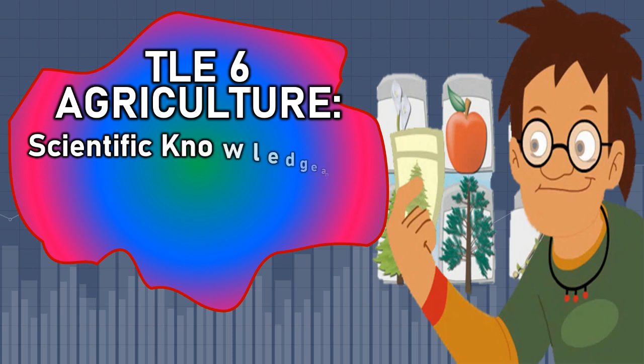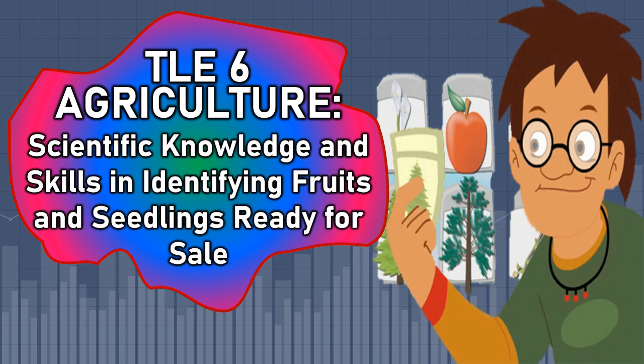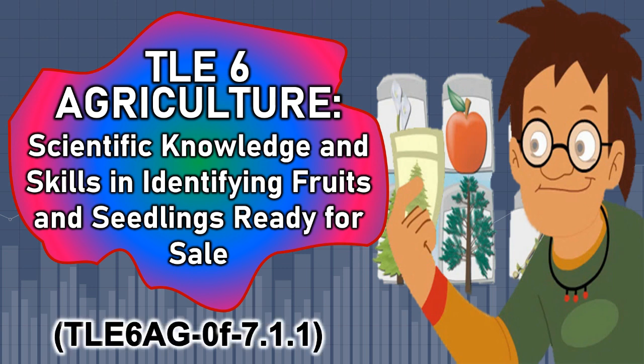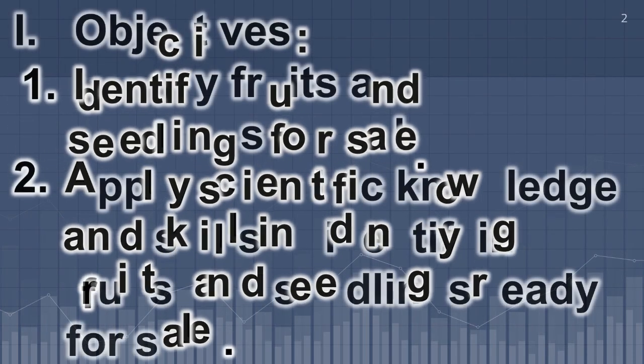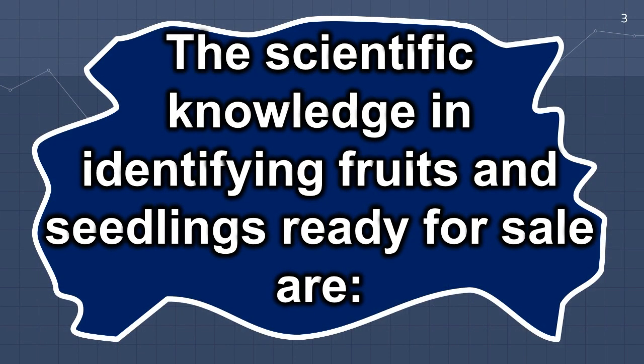TLE 6 Agriculture: Scientific knowledge and skills in identifying fruits and seedlings ready for sale. Objectives: identify fruits and seedlings for sale, and apply scientific knowledge and skills in identifying fruits and seedlings ready for sale.